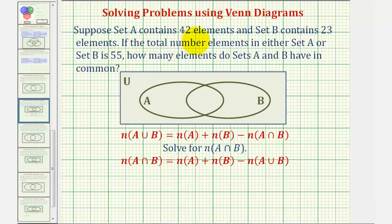Suppose set A contains 42 elements and set B contains 23 elements. If the total number of elements in either set A or B is 55, how many elements do sets A and B have in common?